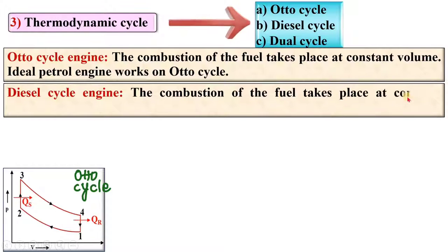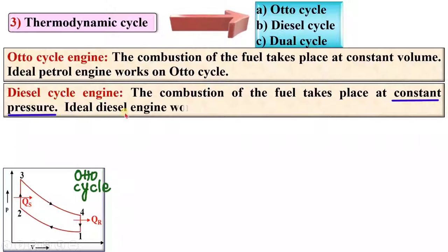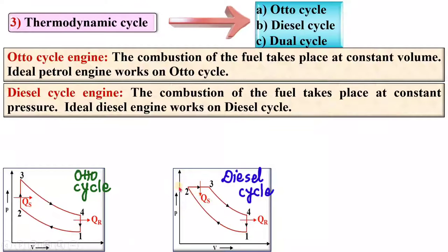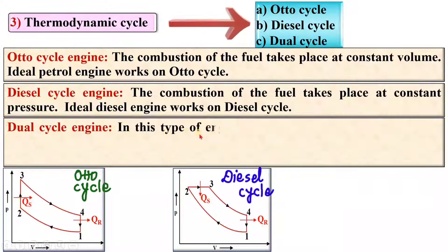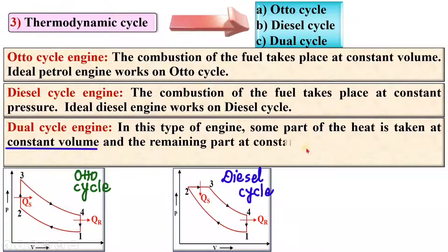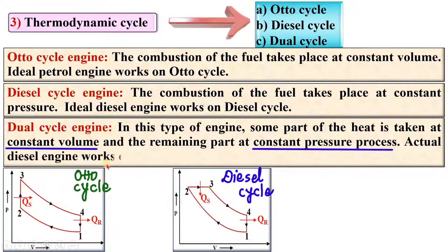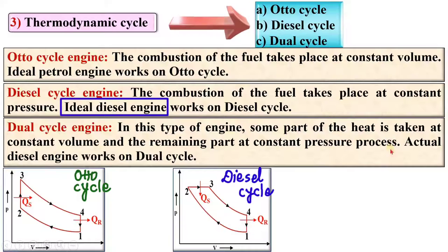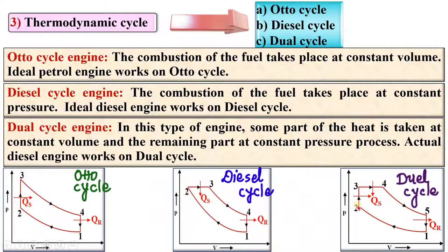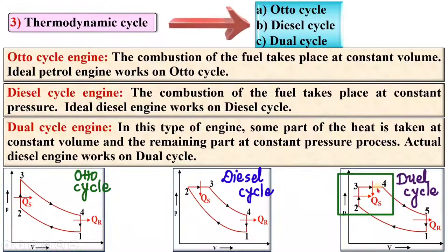In the diesel cycle engine, the combustion of the fuel takes place at constant pressure. The ideal diesel engine works on the diesel cycle. In the dual cycle engine, some part of the heat is taken at constant volume and the remaining part at constant pressure. The actual diesel engine works on the dual cycle. Keep in mind that the ideal diesel engine works on the diesel cycle, whereas the actual diesel engine works on the dual cycle.